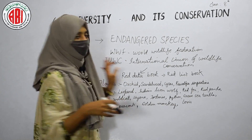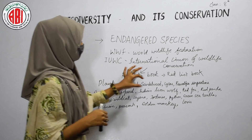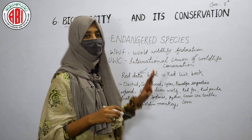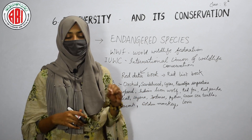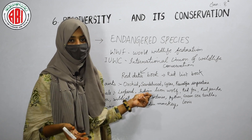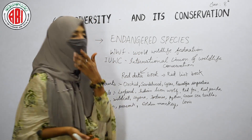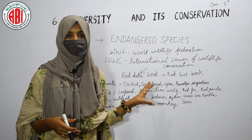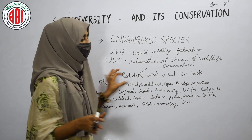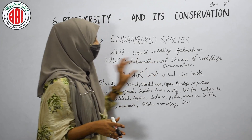The endangered plants in India include orchid, sandalwood, cycas, and Rauwolfia serpentina. Orchid, sandalwood, and cycas are useful in commercial applications. Rauwolfia serpentina is a medicinal plant. If these plants become endangered, it will affect our ability to obtain medicines and commercial benefits from them. We should think about the measures needed to protect all these endangered species.